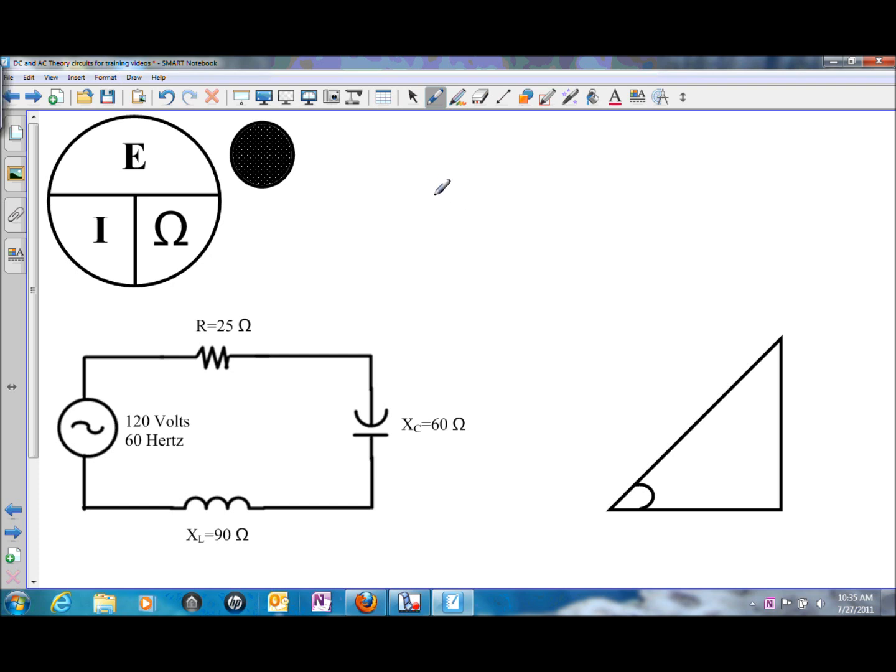One of the differences for a circuit that contains both capacitance and inductance is that those two values are 180 degrees difference. So how are we going to have to calculate the impedance and build the impedance triangle?